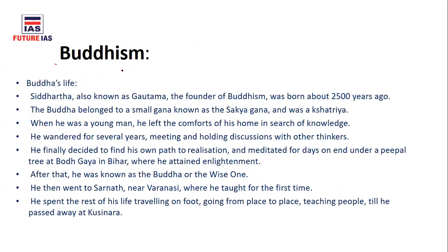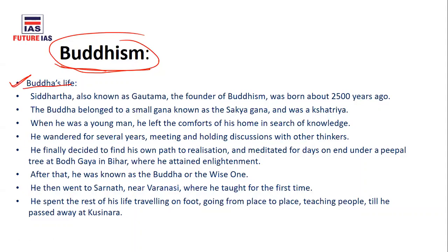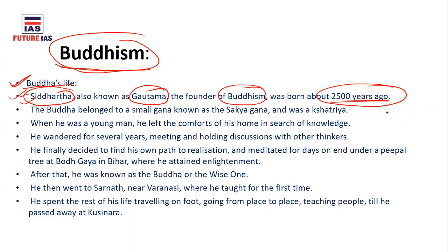Now let's briefly understand Buddhism. Siddhartha — whose original name was Siddhartha Gautama — was the founder of Buddhism. He was born about 2,500 years ago. He belonged to a small Gana called the Sakya Gana, and was from a Kshatriya clan. When he was young, he left his home, wife and children, leaving everything in search of knowledge.